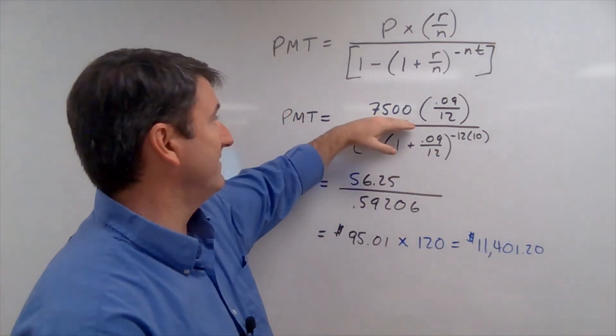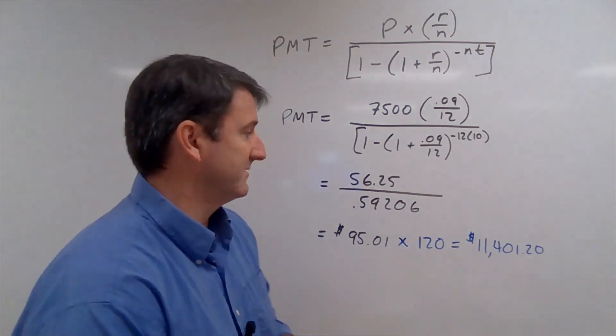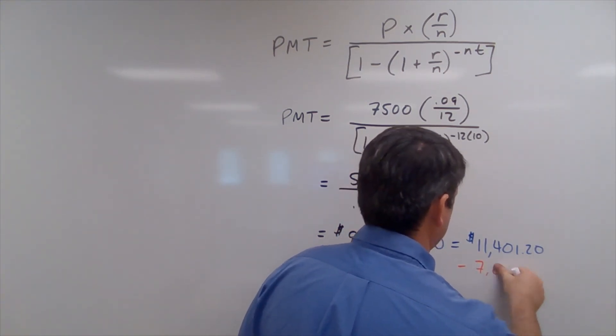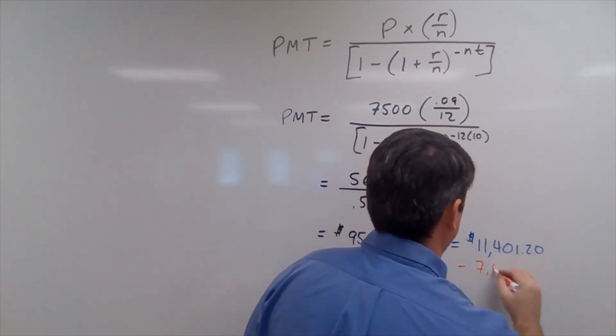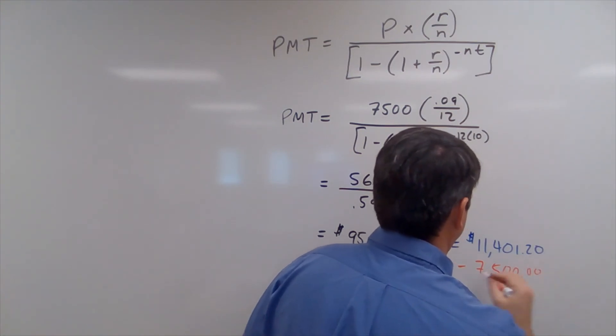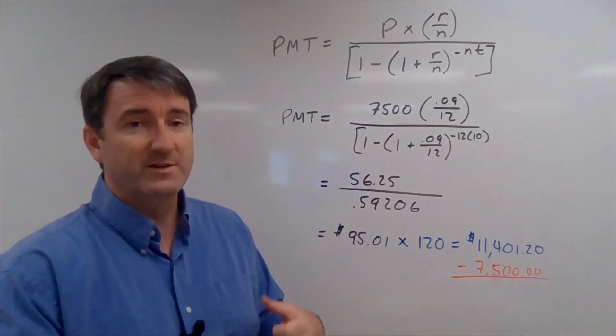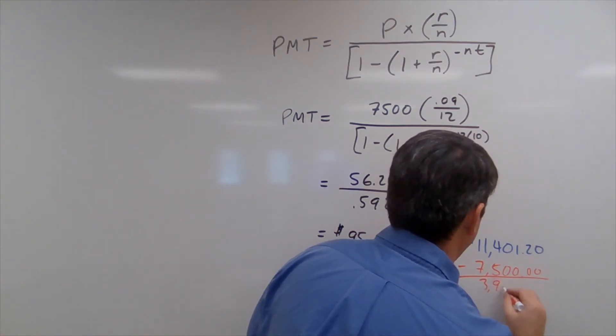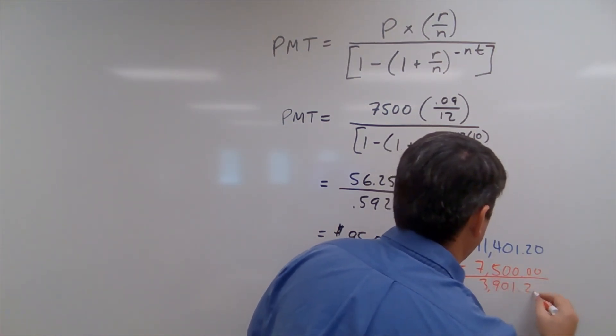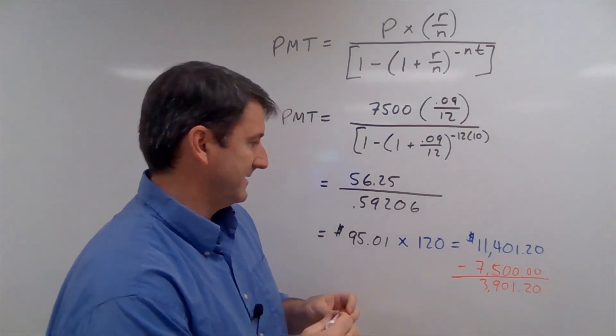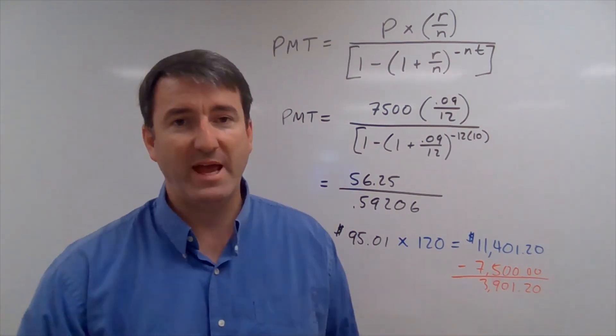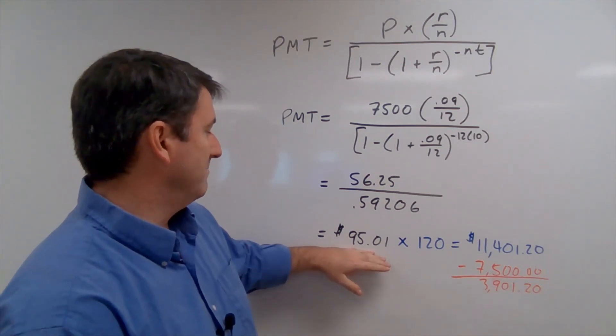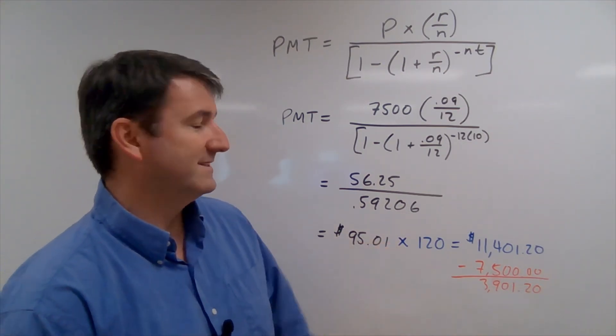So let's subtract $7,500, and what's left over is going to be our interest. So that's going to be $3,901.20. So that's how much we're going to pay in interest on the student loan with a monthly payment of $95.01.